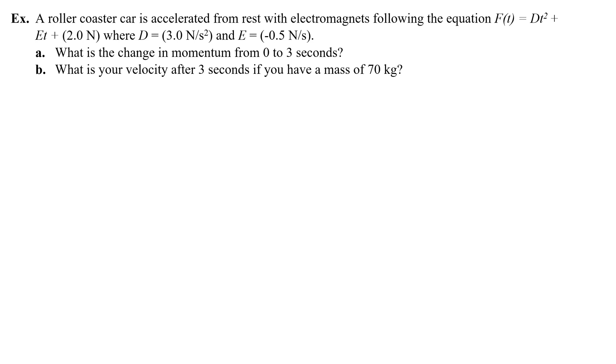A roller coaster car is accelerated from rest with electromagnets following the equation F equals dt squared plus et plus 2 newtons, where d is 3 newtons per second squared and e is negative 0.5 newton seconds. What is the change in momentum from 0 to 3 seconds? And what is your velocity after 3 seconds if you have a mass of 70 kilograms? Let's start with part A. Since this is using numbers and asking me to find numbers, I'm probably going to take my force equation and write it in a bit more math-friendly way, which means I just plug in the coefficients or the constants. So I would write F equals 3t squared minus 0.5t plus 2. So that's a math-friendly way of writing it. How do I find the change in momentum from 0 to 3 seconds? Well, this is a definite integral, and the change of momentum is the impulse.